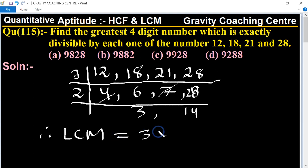3 multiplied by 2 multiplied by 3 and 14. Its product is equal to 252.